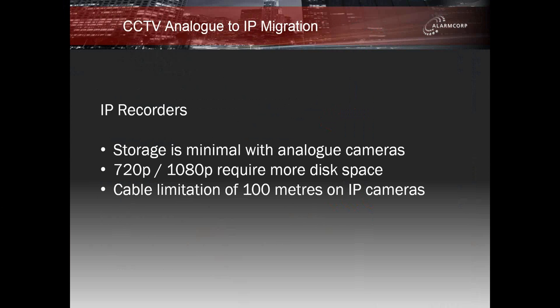One of the main obstacles when upgrading to an IP infrastructure is coax cable runs that exceed 100 metres. 100 metres is the standard maximum length for a Cat5e connected IP camera, and in order to comply with this we need to implement field Ethernet switches to keep within those boundaries. Power Over Ethernet (PoE) allows a single Cat5e cable to carry both data and power to the camera.